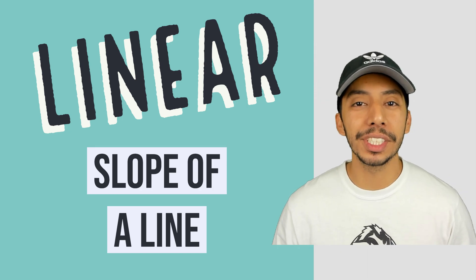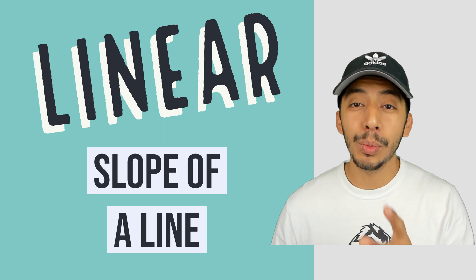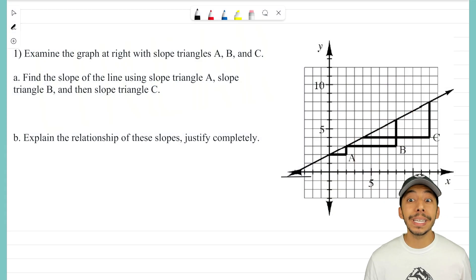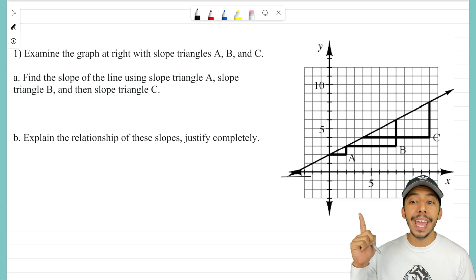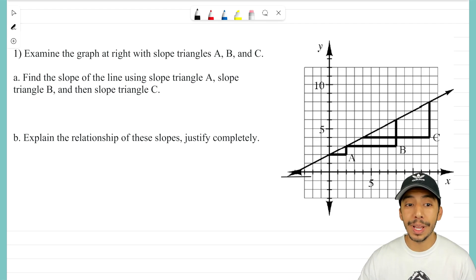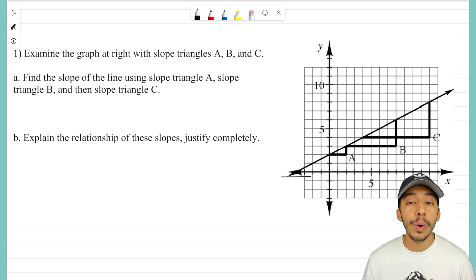Hey everyone, it's the Math Magician. In this video we're going to take a look at linear relationships and see if we can find the slope of a line. For this example problem we're going to be given a graph with three different slope triangles — A, B, and C — and we want to find the slope of the line using those three slope triangles.